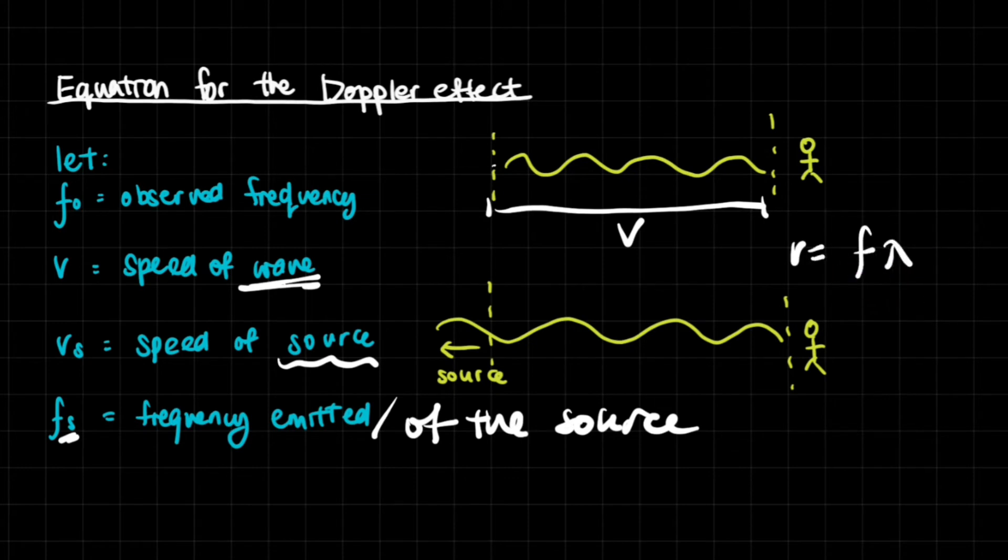This is basically if the source is stationary, and that means that this is going to be the speed of the wave - how fast the sound wave travels within that particular amount of time. Now we know very clearly that V is F times lambda, and that gives us the equation lambda is V over F.